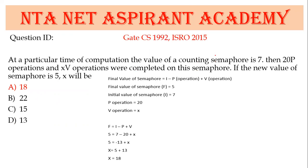Next: counting semaphore. Initial value of counting semaphore S4 is 7, one P operation and 20 V operations, final value of S4 is 5. Using formula: final value = initial − P + V. So 5 = 7 − 20 + x, which gives x = 18.